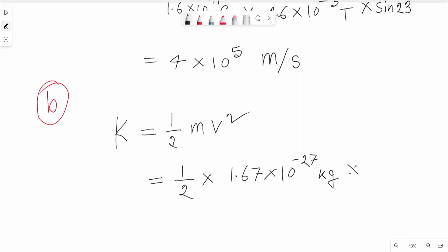And V is the proton's speed, which we just calculated as 4 into 10 to the power 5 meter per second. So we have V squared.